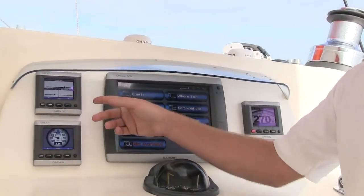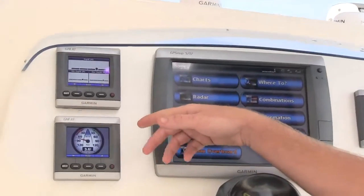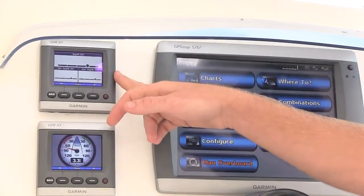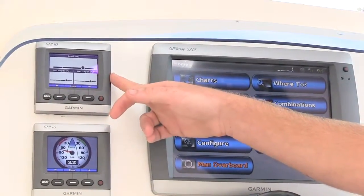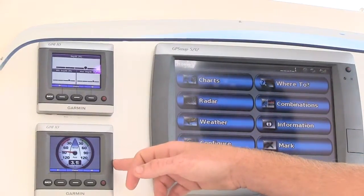So on the side over here we've got your two GMI display instruments. The top one is for your depth, speed and temperature. The second one is specifically for your wind.